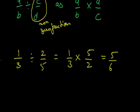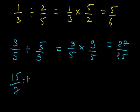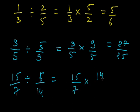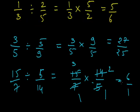I will take one more example. If I have to divide 3 by 5 by 5 by 9, it will be equal to 3 by 5 into 9 by 5. Here I have to multiply 3 and 9, that will be equal to 27, and 5 by 5 that will be equal to 25. Now, if I have to divide 15 by 7 by 5 by 14, it will be equal to 15 by 7 into 14 by 5. Here I can cancel the numerator and denominator: 7 by 7 gives 1 and 14 gives 2; 5 gives 1 and 15 gives 3. So, it will be equal to 3 into 2, which is 6, and 1 into 1, which is 1. So, it will be equal to 6.